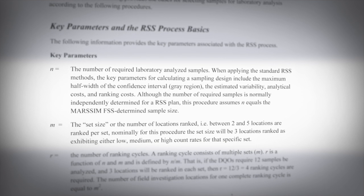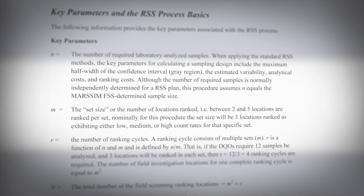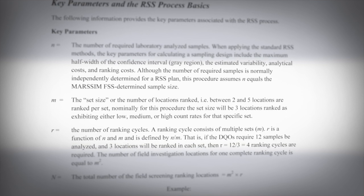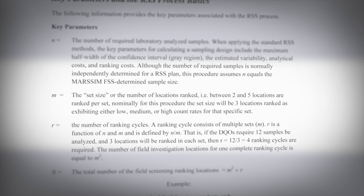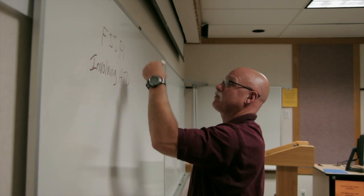Then we're going to have to establish a set size. The set size is usually referred to with the variable M, and that is simply how many locations we're going to rank in a given set. Typically you want to keep the set size between 2 and 5. We like to use 3 — those are just low, medium, and high relative to the count rate that we're seeing in the field. The other item is the number of ranking cycles, which is a function of the set size and the total number of samples required based on our statistical analysis.